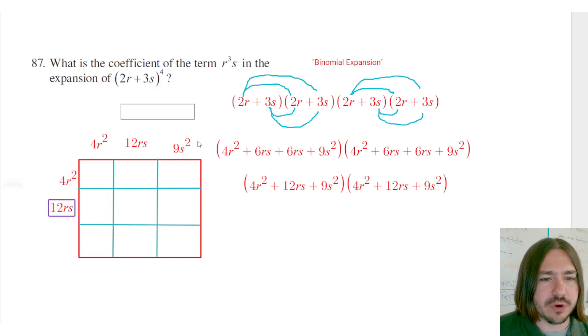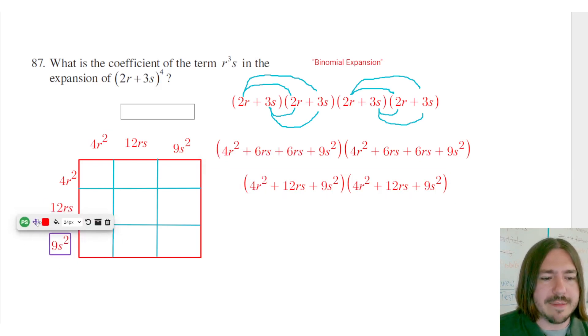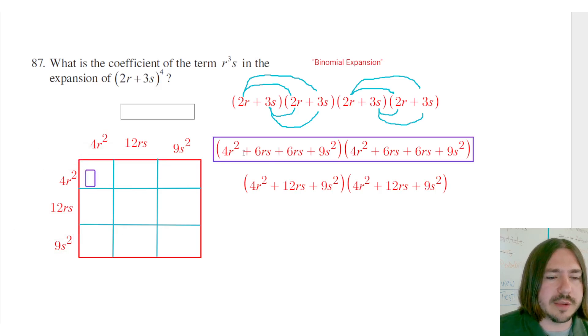And so for each row and each column, I need to make sure I'm multiplying each set of terms. I need to multiply 4r squared by each term in the second polynomial. This is just going to be a way to organize this and make sure that I'm doing all the necessary multiplications. So here I've got 4r squared times 4r squared is going to be 16r to the fourth.